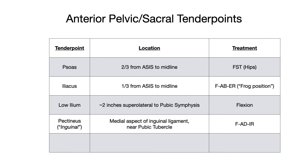Our final anterior pelvic and sacral tender point is the low ilium flare-out. There are two tender points with very similar names: the low ilium tender point we already discussed, and now the low ilium flare-out — literally the same name with 'flare-out' added at the end. These represent two distinct tender points in somewhat the same region, so don't get confused. The low ilium flare-out is located on the descending ramus of the pubic bone, which is distinct from two inches superolateral to the pubic symphysis.